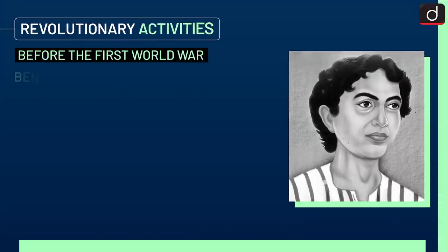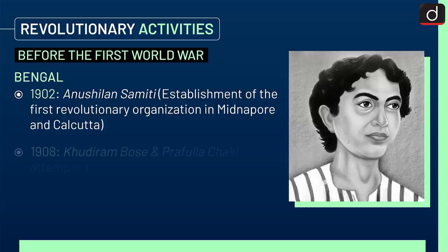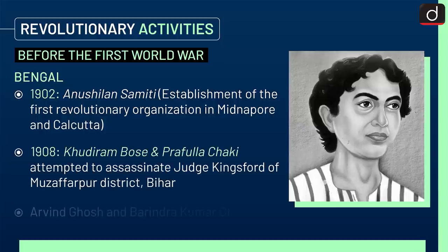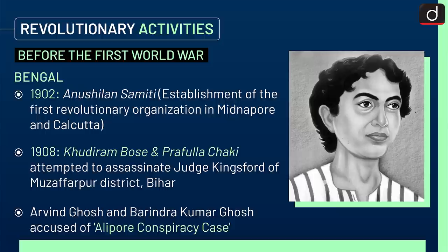Now let's look at Revolutionary Activities. First, activities before the First World War: In Bengal, in 1902, Anushilan Samiti was established as the first revolutionary organization in Midnapore and Calcutta. In 1908, Khudiram Bose and Prafulla Chaki attempted to assassinate Judge Kingsford of Muzaffarpur district, Bihar. Aurobindo Ghosh and Barindra Kumar Ghosh were accused in the Alipore Conspiracy Case.